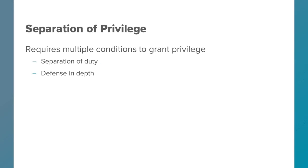The separation of privilege principle is one you probably saw in grade school when you studied medieval history. Many books have pictures of castles, and if you look at them, there's a lot of walls and a moat. There's a moat, then the main wall, then the inner wall, then the keep, then the dungeon — which is the most secure part of the castle. For an attacker to get in, they first have to cross the moat, breach the outer wall, then the inner wall, then get to the keep. That's an example of separation of privilege, sometimes known as defense in depth.